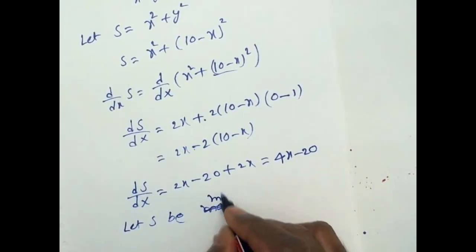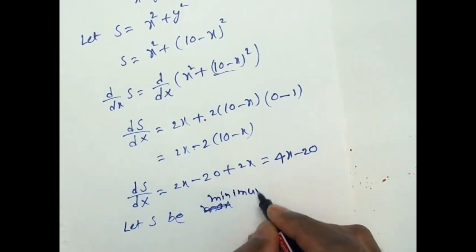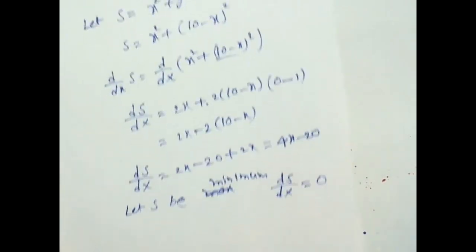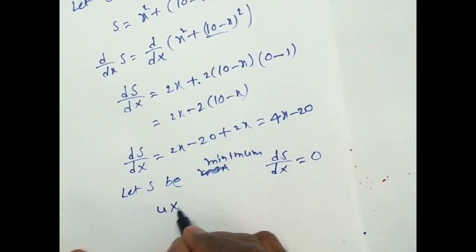Let S be minimum. dS by dX is equal to 0. 4X minus 20 is equal to 0. And that 4X is equal to 20. X is equal to 20 by 4. That value is 5.